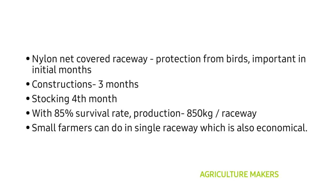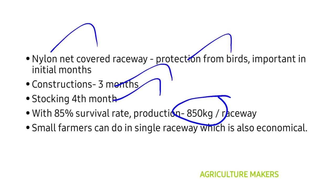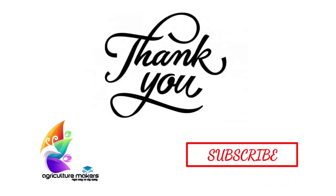The raceway should be covered with nylon nets to protect trout from birds, especially in the initial months of growth. The entire construction of the raceway and sedimentation tank takes three months, so stocking begins in the fourth month. A survival rate of 85% is expected, with a production of about 850 kg per raceway. While two raceways are ideal, small farmers can use a single raceway, which is also economical.